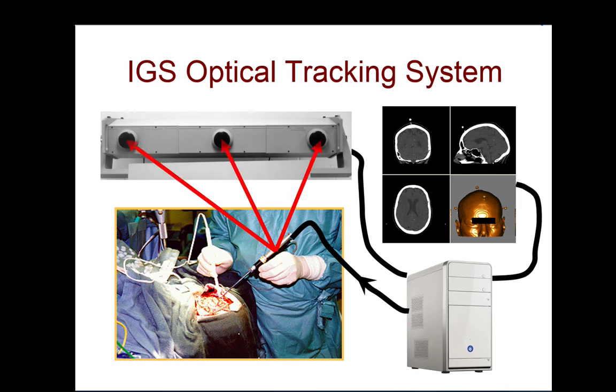By triangulation, the system can determine where that probe is — not only where the infrared emitting diodes are on the probe, but also where the tip of the probe is.